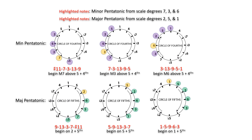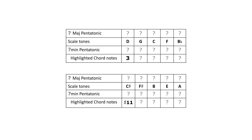And when superimposing a major pentatonic scale, begin a major third above 2, 5, or 1 and stack fourths to align with scale degrees 3, 6, 2, 5, 1. We've chosen two pentatonic scales to put our hacks to the test. Pause the video to figure out the chord's roots, the superimposed scales, and the highlighted notes. Check your answers on the next screen.